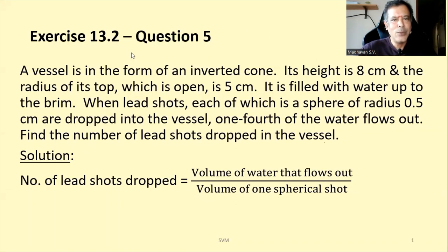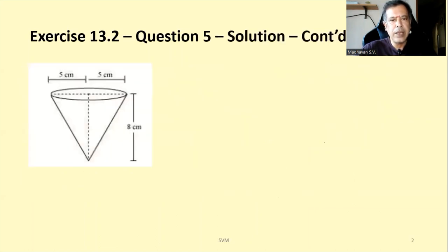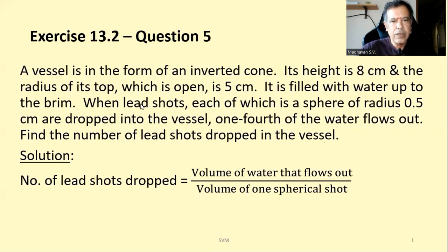Exercise 13.2, Question 5. A vessel is in the form of an inverted cone. Its height is 8 cm and the radius of its top, which is open, is 5 cm. It is filled with water up to the brim. Lead shots, each a sphere of radius 0.5 cm, are dropped into the vessel and one-fourth of the water flows out. Find the number of lead shots dropped. We need: volume of water that flows out divided by volume of one spherical shot.